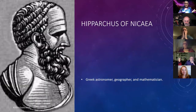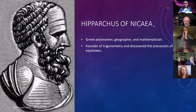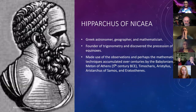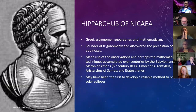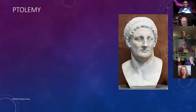Hipparchus of Nicaea was a Greek astronomer, geographer, and mathematician — the founder of trigonometry — who discovered the precession of the equinoxes. He made use of observations and mathematical techniques accumulated over centuries by the Babylonians and various Greek scientists. He may have been the first to develop a reliable method to predict solar eclipses, and he compiled the first comprehensive star catalog of the Western world.